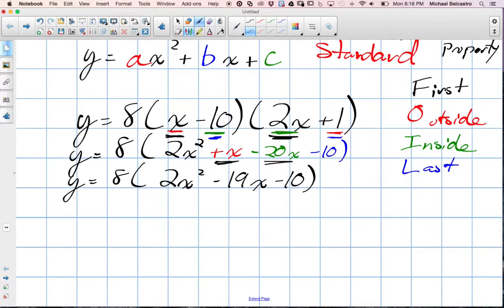Now, none of the terms left in the brackets are like terms. This is to the power of 2, this is to the power of 1, and this has no exponent. So I can't collect anything in here. I still have my 8, so I need to distribute, just like in grade 9. This is distributive property. So what happens here is 8 times 2x squared will become 16x squared.